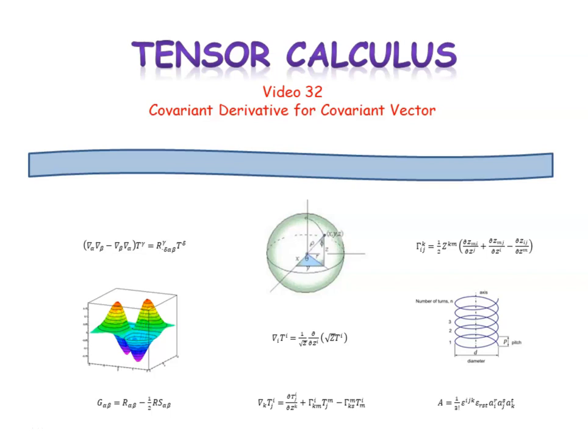Welcome back to our series on tensor calculus. Back in video 28, we derived an expression for the covariant derivative as it relates to contravariant vector components. Here in video 32, we're going to do something similar to derive the expression for the covariant derivative as it relates to covariant vector components.